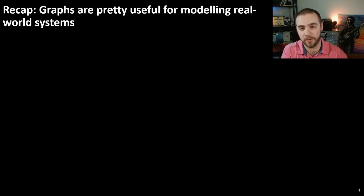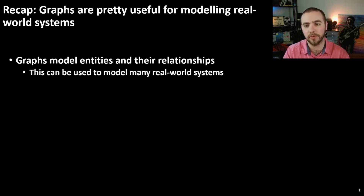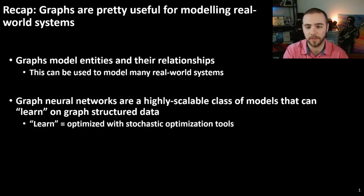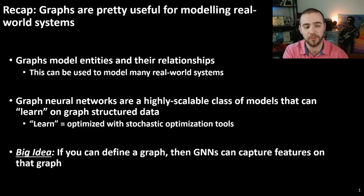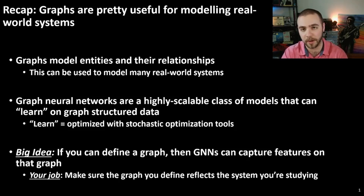As a quick recap of what we've covered previously, graphs can be extremely useful for modeling real-world systems, especially in a machine learning context. Graphs give you the power to model entities and their relationships, and this can be used to model many real-world systems — for example, transportation systems or the connections between reinforcement learning agents. Graph neural networks are a class of highly scalable algorithms that can learn on graph-structured data, optimized using stochastic optimization tools. If you can define a graph, a graph neural network can help you capture features on that graph.